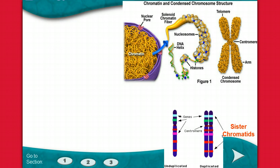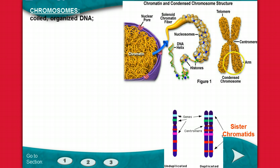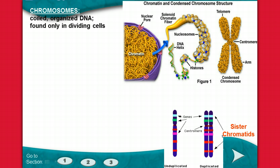In studying cellular reproduction, we need to focus first on what has to happen with the DNA in order for a cell to reproduce and make sure that both new cells being made have the exact amount of DNA required. DNA is usually found inside the nucleus in the form of chromosomes, which are the coiled, organized form of DNA. That condensed chromosome form — everything coiled and wound up — is only seen in dividing cells.